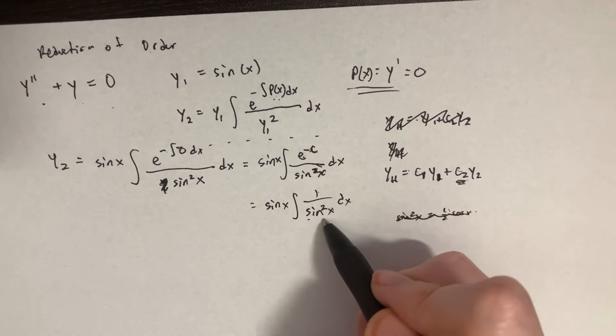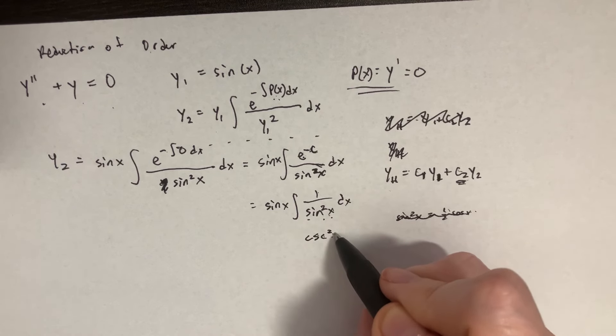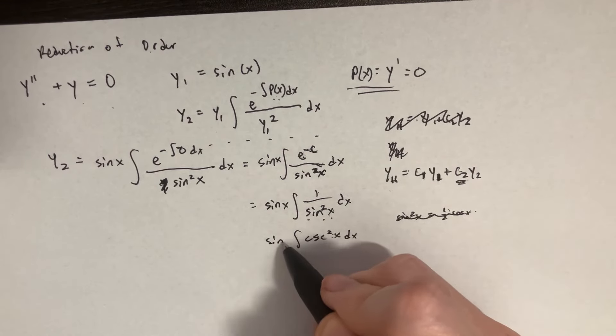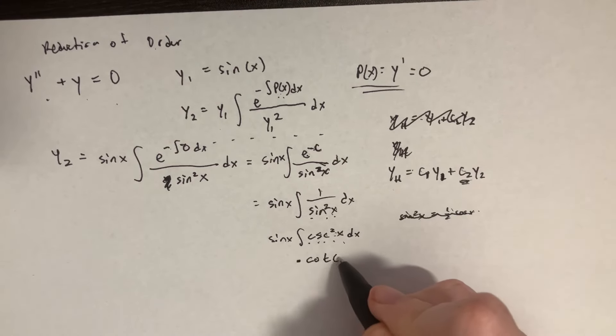We just have to realize that the sine squared of x on the bottom is the same thing as saying cosecant squared x on the top. And if we're doing that integral, then we should realize that this is simply going to be cotangent or negative cotangent of x.